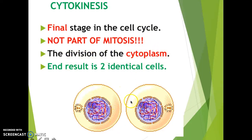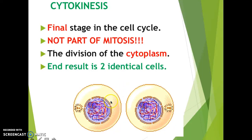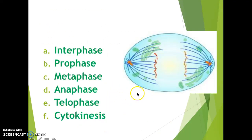Remember, the cytoplasm is the jelly-like substance inside the cell, and in cytokinesis it separates into two different cells. As a result, we have two identical daughter cells being made.